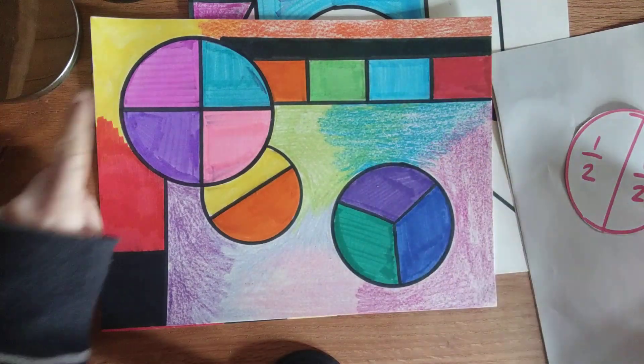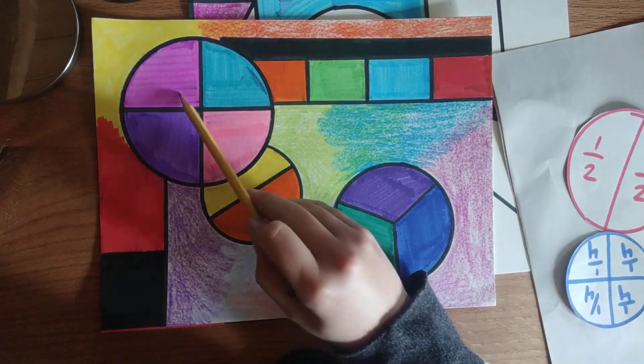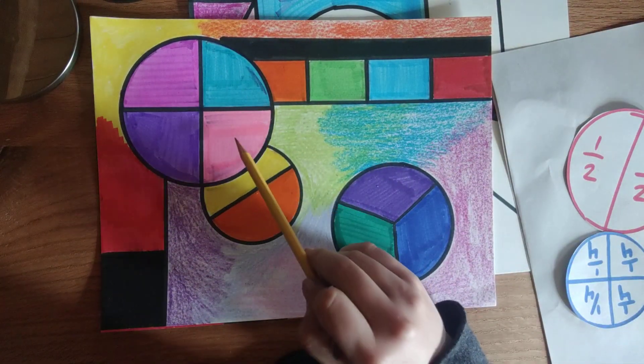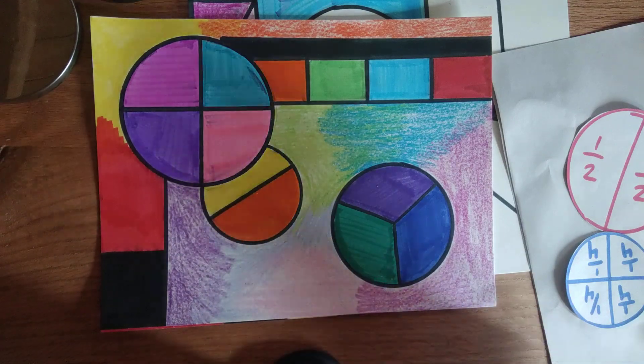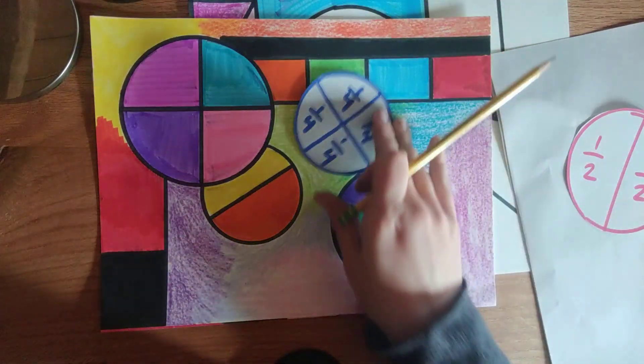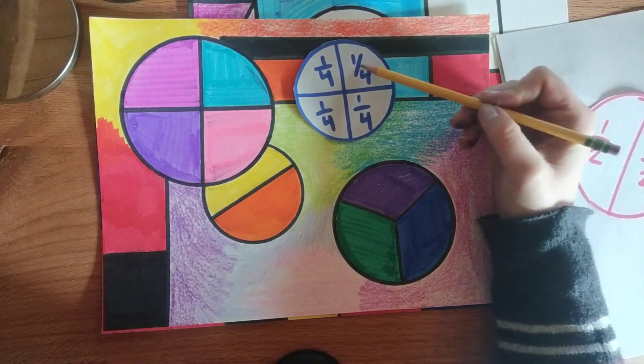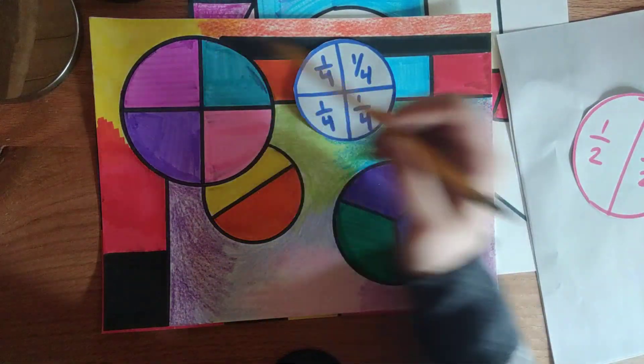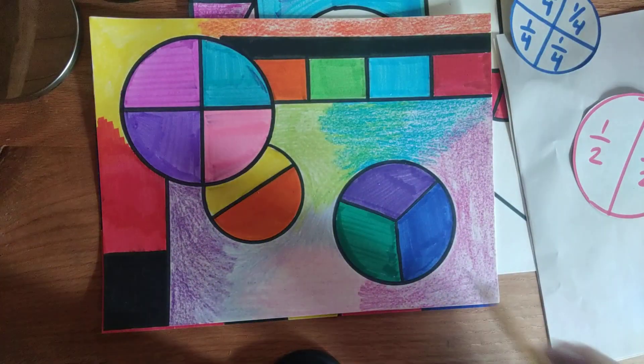This circle over here, let's count how many parts it has. One, two, three, four. That one is divided into fourths. So, I have one over four. We've got four parts in that circle. Last but not least, I have this one.